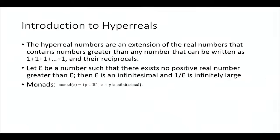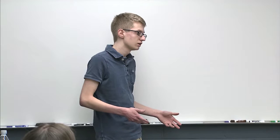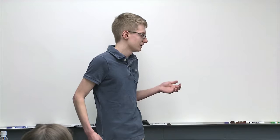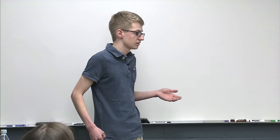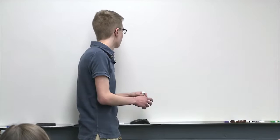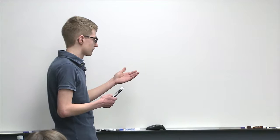Abraham Robinson created a way of looking at infinity called the hyperreal system. The hyperreal system is an extension of the real numbers that includes numbers that are both infinitely small and infinitely large. We'll call the infinitely small one epsilon — that's our infinitesimal. It's infinitesimal if it's greater than zero but less than any positive real number. We also include the reciprocals of these numbers, which are the infinitely large numbers.